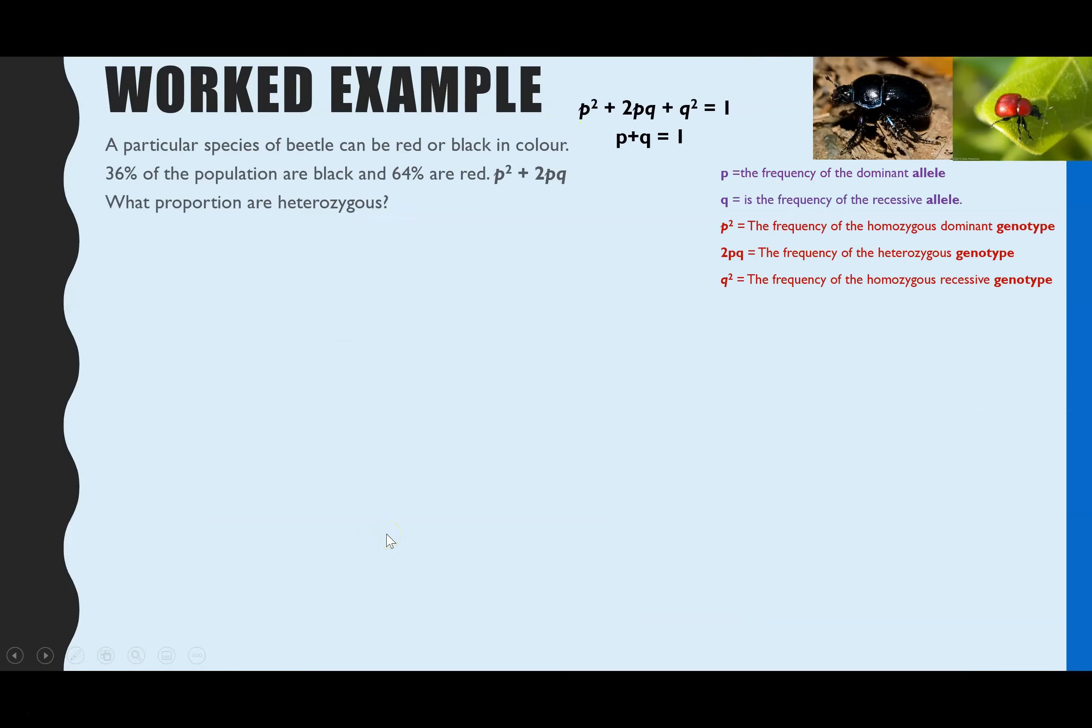Let's have a go at another one. For this one, we're told that a particular species of beetle has a gene coding for the color and the alleles are red or black. 36% of the population are black and 64% are red. What proportion are heterozygous? Within this question, what we haven't actually been told but you would need the information of, is that red is dominant and black is recessive.